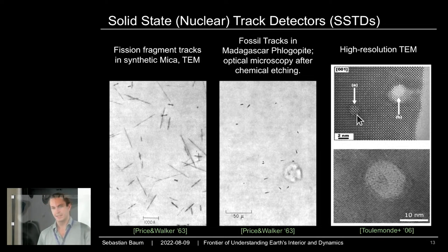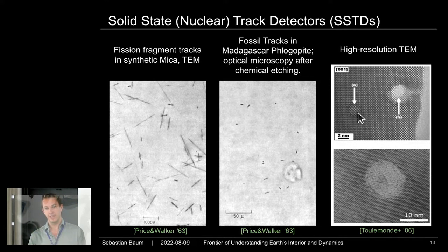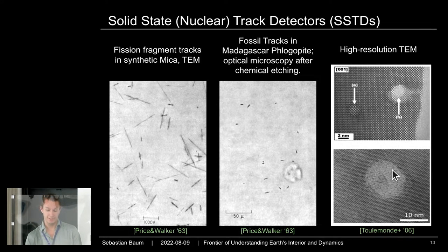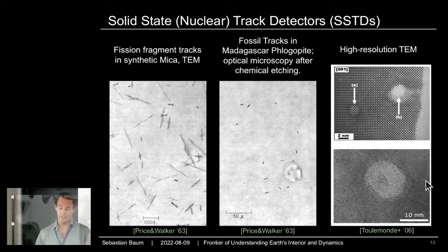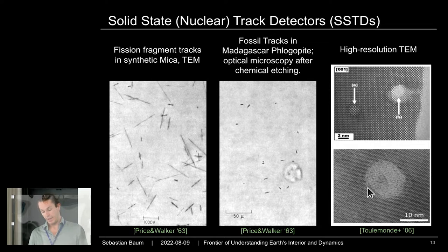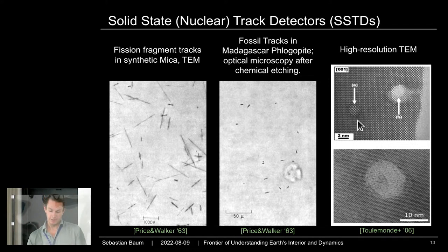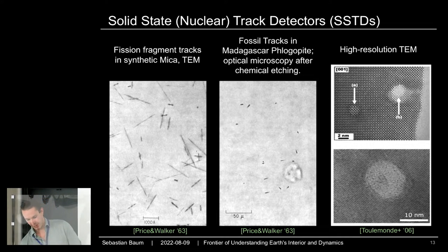These tracks are well-known: as ions travel through materials, they stop and create a lasting damage track. What these tracks actually are is some irregularity in the crystal lattice. In mica, for example, if you put a lot of energy locally, the mineral melts, and as it refreezes it forms an amorphous core rather than recrystallizing. In other materials you see chemical stress instead. These are irregularities in the crystal lattice.